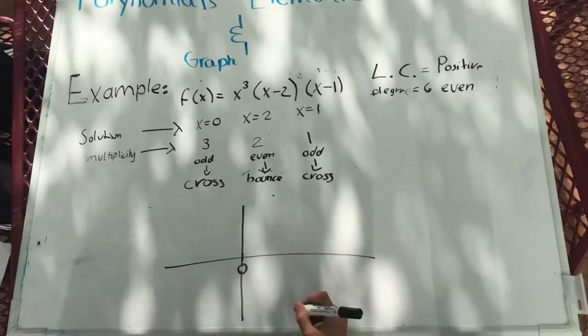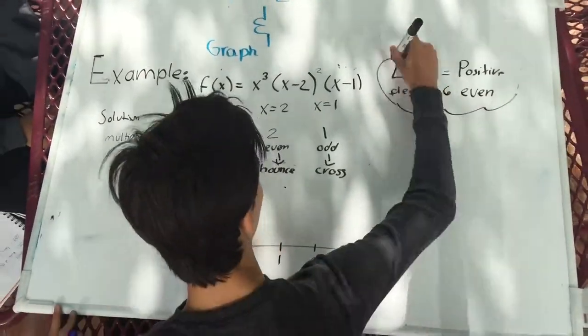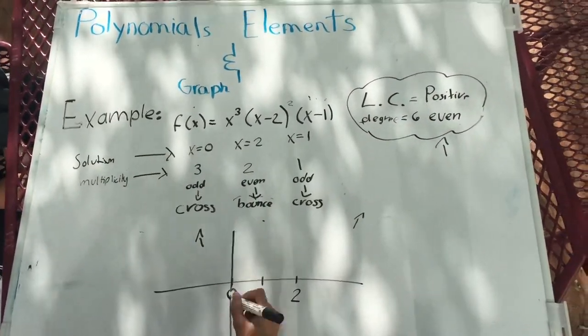Then we mark the points at the x-intercept: 0, 2, and 1. And we graph.